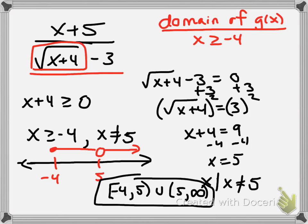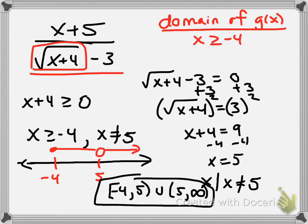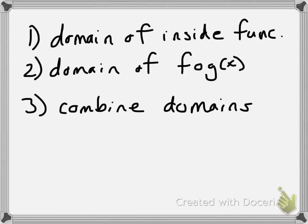So with my overall domain, I now have the composite function, which was x plus 5 over the square root of x plus 4 minus 3, and I have the domain of said function. So overall, the three steps I want to take when I find the domain of a composite function is that first of all, I find the domain of the inside function. Then I find the domain of f of g of x while finding f of g of x. And then I combine my domains into one overall expression.